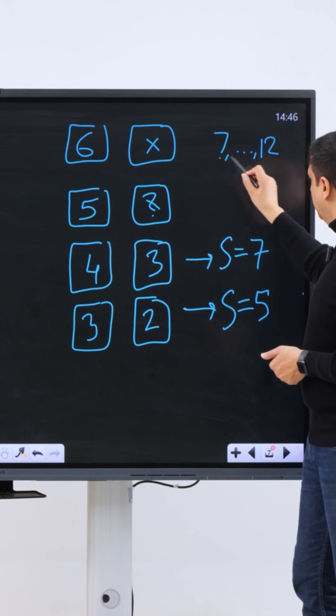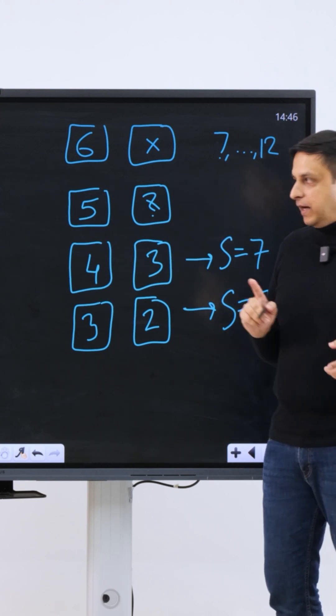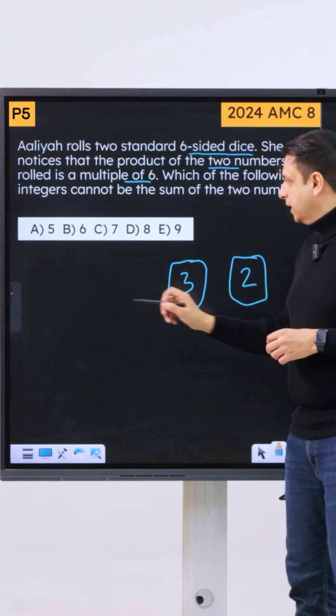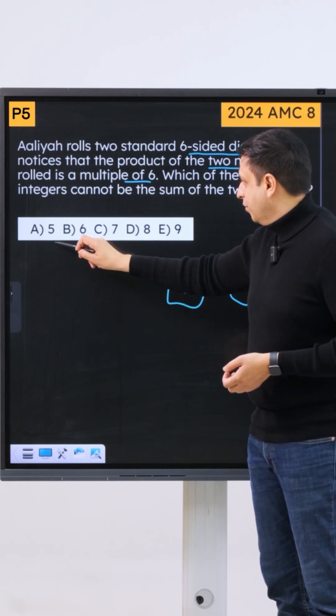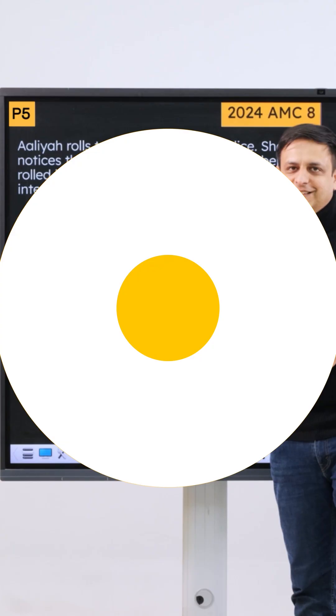So we have all the possible sums from seven to twelve. We also have five. So which sum do we not get? We don't get a sum of six. So six is not possible, and therefore B (6) is our answer.